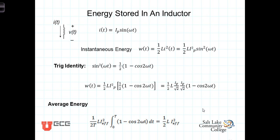But the average energy is not zero. There is energy in the magnetic field of the inductor. Here we have the current i sub p sine of omega t. Its instantaneous energy, the energy at any given instant of time, is simply equal to one half l i of t squared, or i squared of t, which is equal to one half l i sub p squared times the sine squared of omega t.